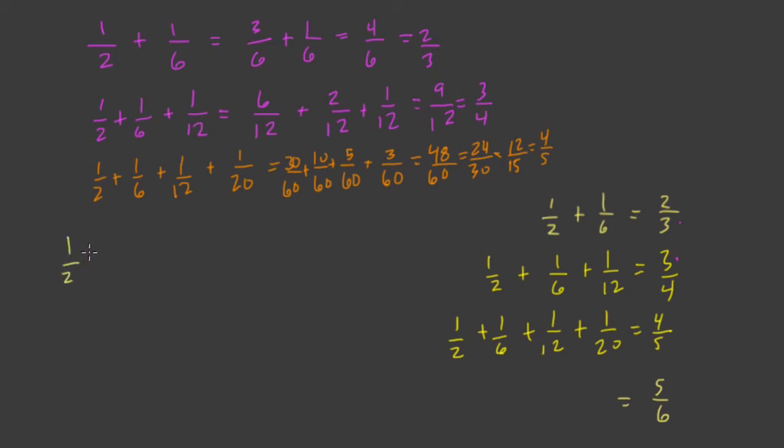We have a half and a sixth. So what happened? What changed here? I added four to the denominator. It went from two plus four is six. And then one-twelfth. What happened there? Then I added two more than four. I added six. And then with a twentieth, I added eight from twelve. So two more than six is eight.